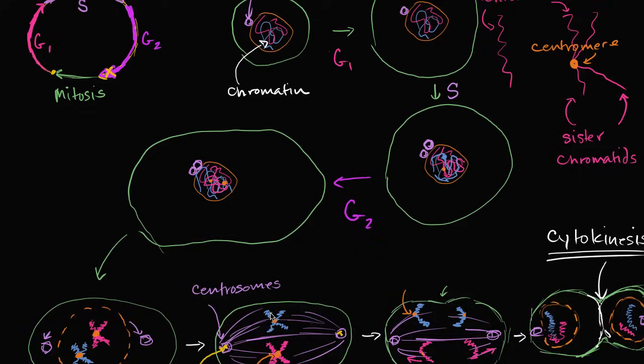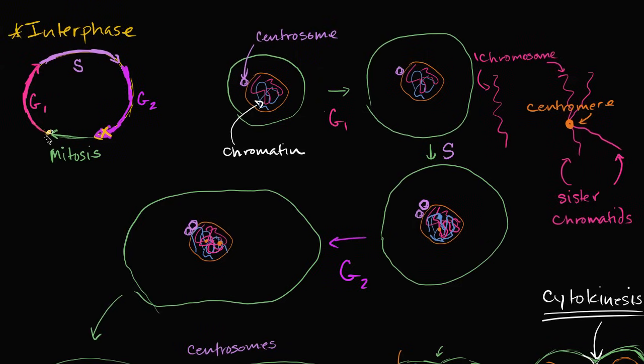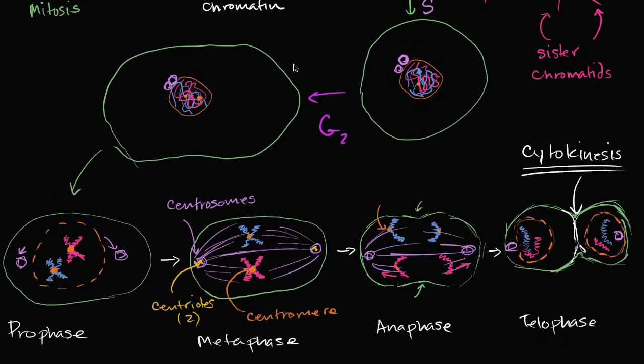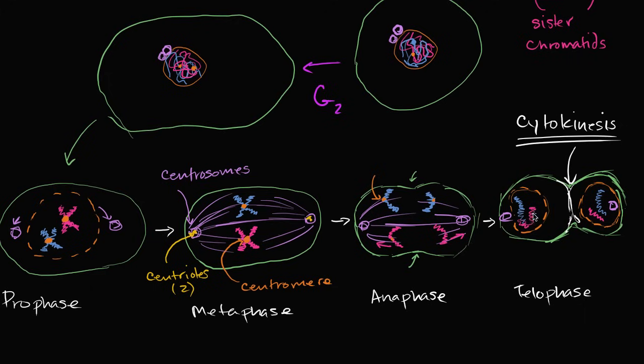And at that point, you're back to this phase of the cell cycle. Now each of these, now two cells, are going to go through interphase. G1, S phase, replicate their DNA. G2 phase, grow some more. And then go through mitosis again. And then these two will turn into four cells. Anyway, hopefully you enjoyed that.